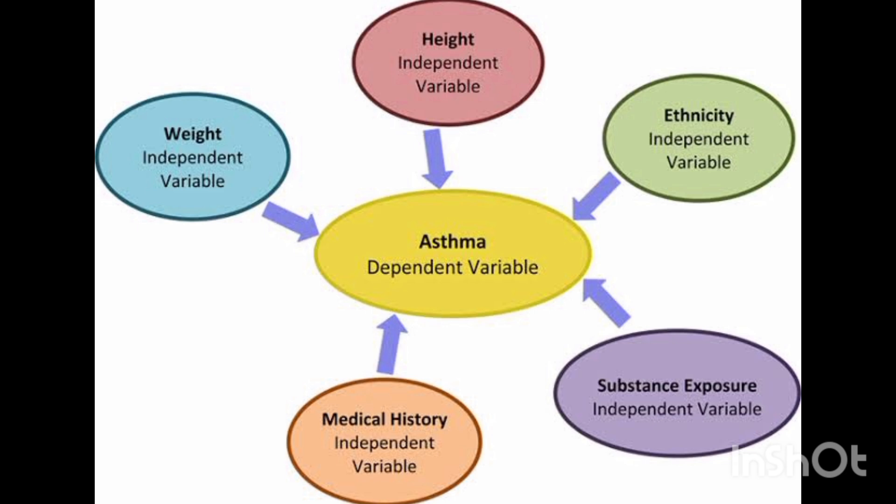These independent variables affect the asthma patient — for example, if you are on the obesity side, you will have more asthma. And if there is substance exposure like a virus, infections, or allergies, these will also affect the asthma. Thank you.